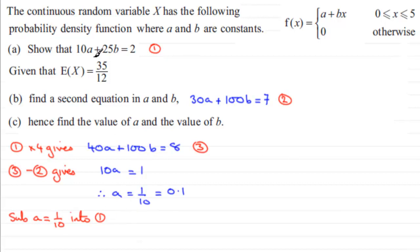So what have we got? We've got 10 times A, so we've got 10 multiplied by 1 tenth plus 25B equals 2. So 10 times 1 tenth is 1 plus 25B equals 2. Take away 1 from both sides and you therefore have 25B equals 1, and divide both sides by 25 and you get B equals 1 25th.